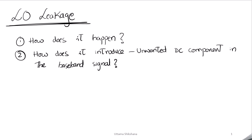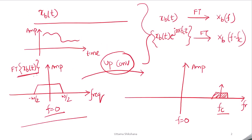Let me start with the very basic concept. I will consider xb(t), which is a baseband signal — a time-domain signal. I will consider it as a real signal for simplicity. If you look at the spectrum of this signal in the frequency domain, it consists of various frequencies. To determine the frequency content, we take the Fourier transform of xb(t). If you plot the frequency spectrum, you will see that the significant signal components lie within a certain frequency range, and this spectrum is centered around frequency zero, which is the DC frequency.